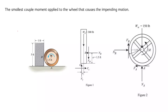Here we have a question. In this question we are rotating this disk as we can see here. We have to find the minimum value of couple moment that we will provide to this disk in order to impend the motion. So let's understand what's going to happen here.